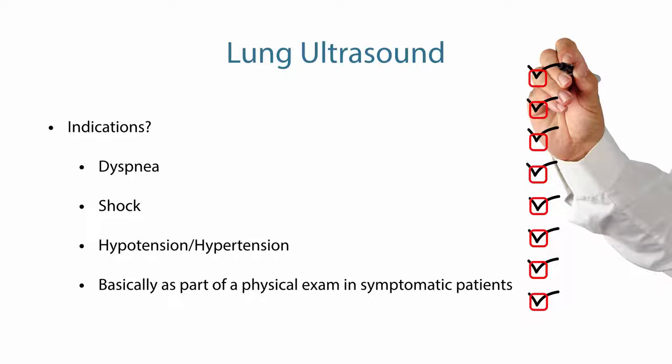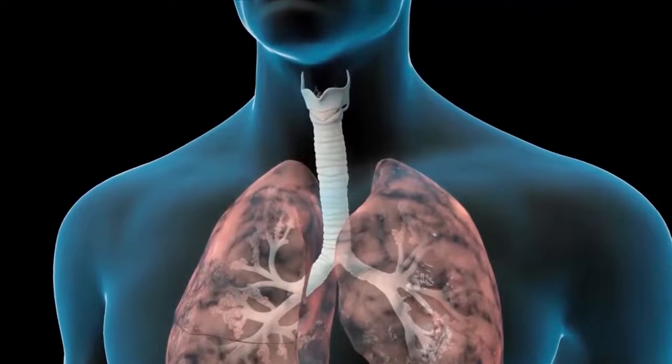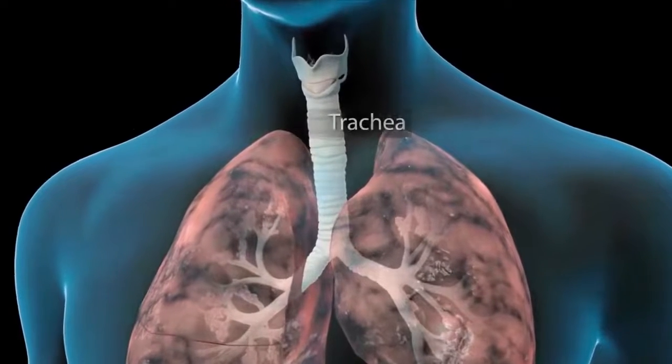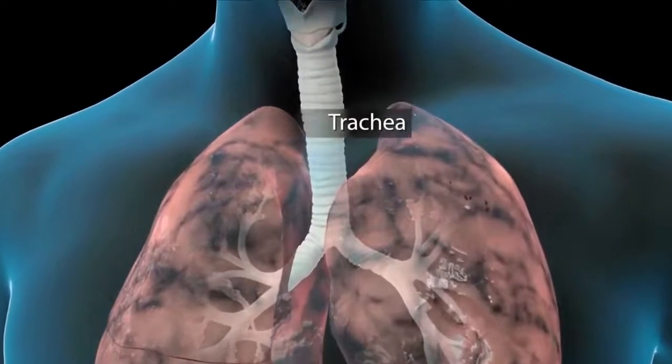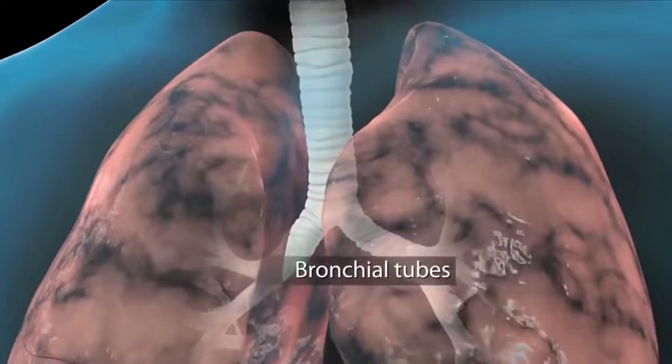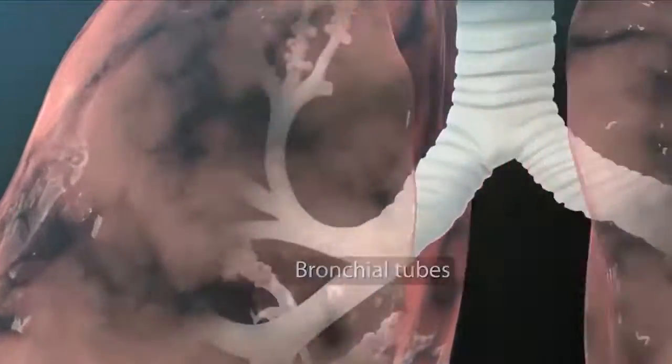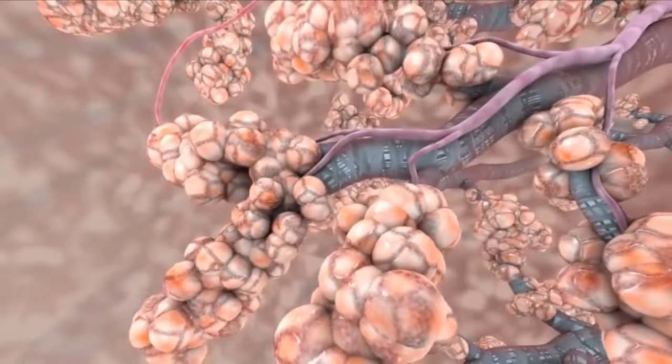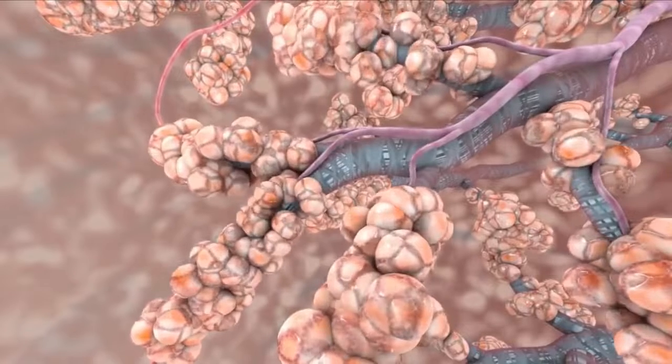Of course, we know the anatomy of the respiratory tract. We have the trachea, and then we have 300 million alveoli. This is the organ we use for breathing.